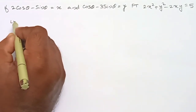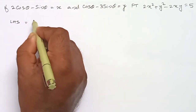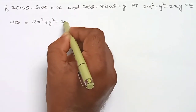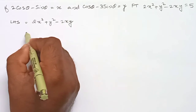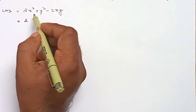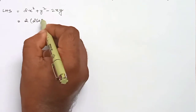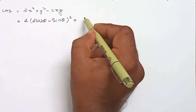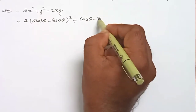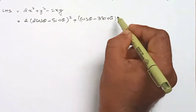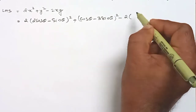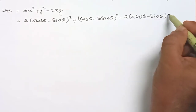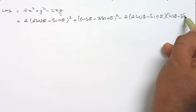We will take LHS. LHS is equal to 2x² + y² - 2xy. That is 2 into x square, where x is (2cosθ - sinθ) whole square, plus y square where y is (cosθ - 3sinθ) whole square, minus 2 into (2cosθ - sinθ) into (cosθ - 3sinθ).